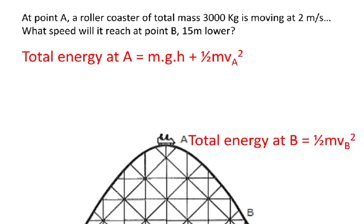The total energy at B is going to equal the kinetic energy at B, which is equal to a half times the mass times the velocity at B squared. And these two groups of energy, the total energy at A and the total energy at B, by the conservation of energy, these terms must be equal.